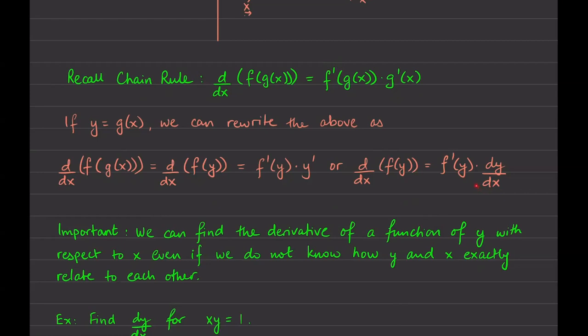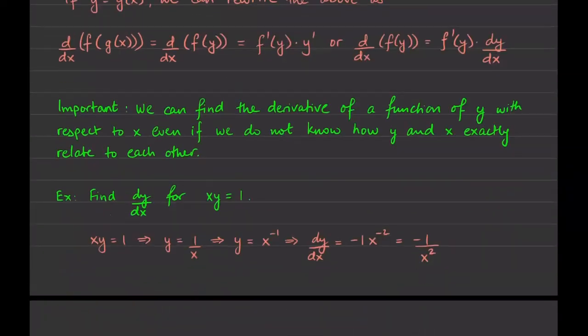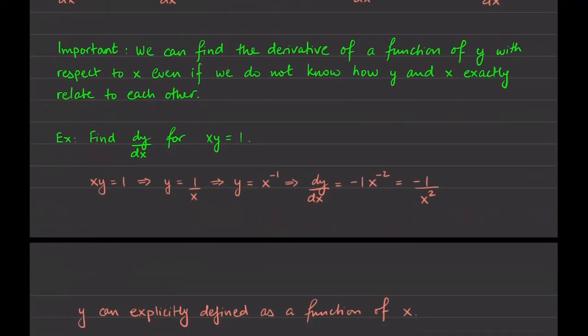We can find f prime of y, and we can find dy/dx, but we don't even know what the exact relationship is between x and y. Is x 4 times y? Is y x squared? Is y 4x minus 5 over 3π? We have no idea what that relationship is, and what implicit differentiation allows us to do is find how much an output value will change if we change the input value ever so slightly, without explicitly knowing what the relationship is between the two.